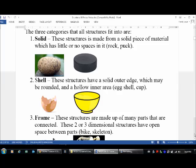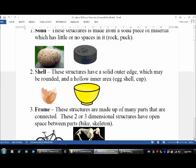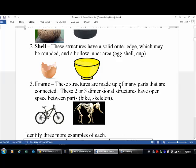The next one is a shell, a shell shape. Things that fall into this category are structures that have a solid outer edge. It may be rounded, doesn't always, but it's definitely hollow, has a hollow inner area. Here's a couple of very classic examples, an egg shell and a bowl or a cup.